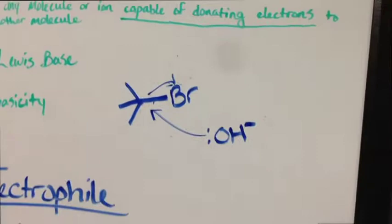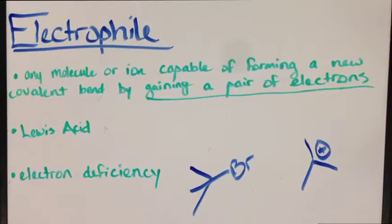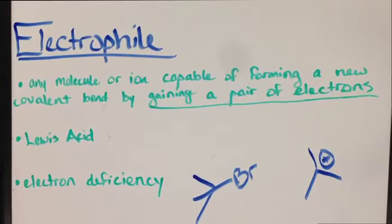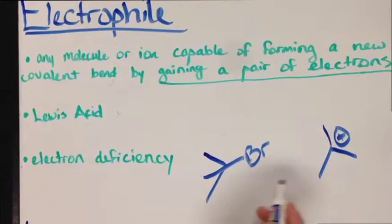The second major component are electrophiles. Electrophiles are defined as any molecule or ion capable of forming a new covalent bond by gaining a pair of electrons, defined as Lewis acids, and are electron deficient.